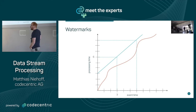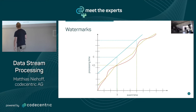With a fixed watermark, latency increases but we have all the data inside — correctness is high. With a heuristic watermark, latency is a bit better — maybe one and a half seconds earlier — but we miss some data points.